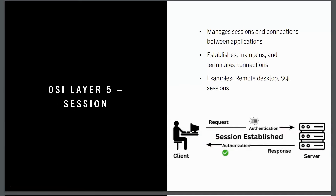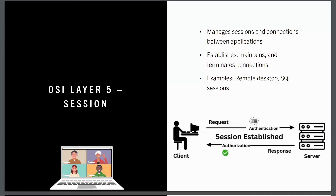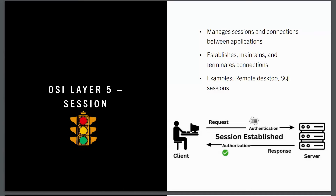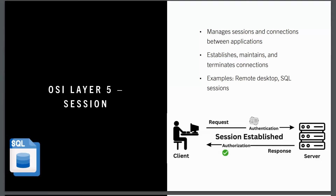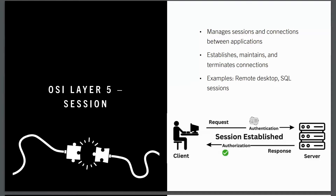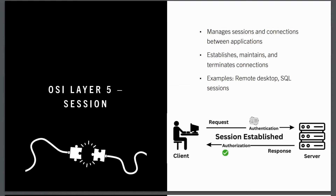OSI layer five: the session layer. Layer five is responsible for setting up and managing communication sessions between two devices or applications — like making sure a phone call between two people happens smoothly without interruptions. This layer handles the entire process of creating and managing a connection: it establishes the session, keeps it active as long as it's needed, and then terminates it when the communication is done. Remote desktop connections and SQL sessions — database queries — rely on layer five to manage their ongoing communication, ensuring sessions are properly established, maintained, and closed.